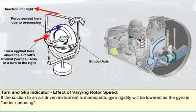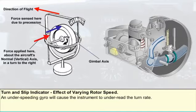If the suction to an air-driven instrument is inadequate — which can happen as a result of either high altitude, a choked filter, or a leaking suction tube — gyro rigidity will be lowered as the gyro is under-speeding. Consequently, the secondary precession needed to equal the aircraft turn can be generated by a smaller secondary torque, and this reduced torque will be produced by a smaller angle of gimbal tilt.